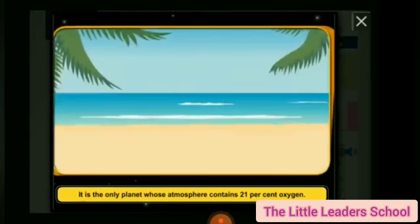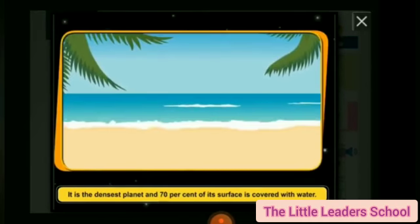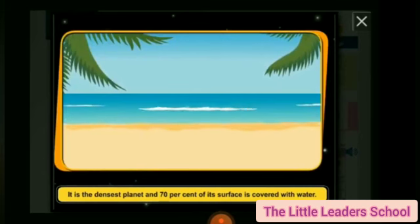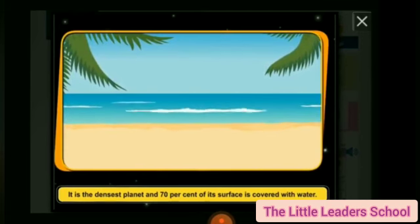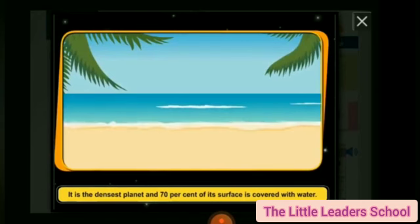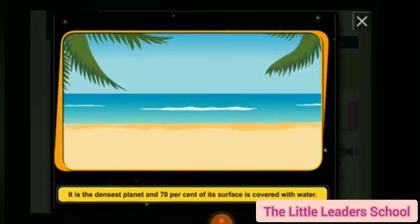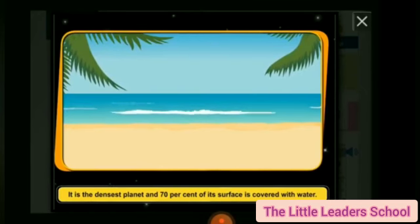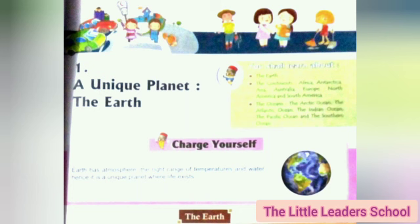Third reason: it is the densest planet and 70% of its surface is covered with water — यह बहुत घना है और इसके चारों तरफ 70% पानी से घिरा हुआ है. Page number 7 is complete. Next video में आपको page number 8, continents के बारे में पढ़ाऊंगी, okay students?